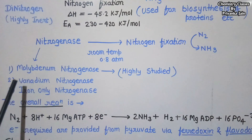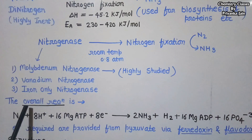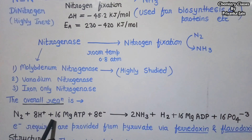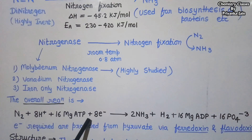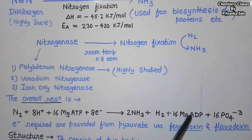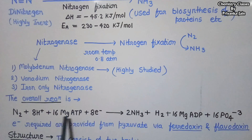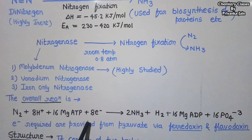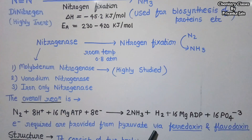The overall reaction for molybdenum nitrogenase is: N2 + 8 H⁺ + 16 MgATP + 8 electrons → 2 NH3 + H2 + 16 MgADP + 16 phosphate groups. ATP is converted to ADP, the protons are utilized in the reduction of nitrogen, and 8 electrons are used in this reaction. These electrons are provided from pyruvate — meaning the reducing power comes from pyruvate — and these electrons are transferred via electron transfer enzymes like ferredoxin or flavodoxin.